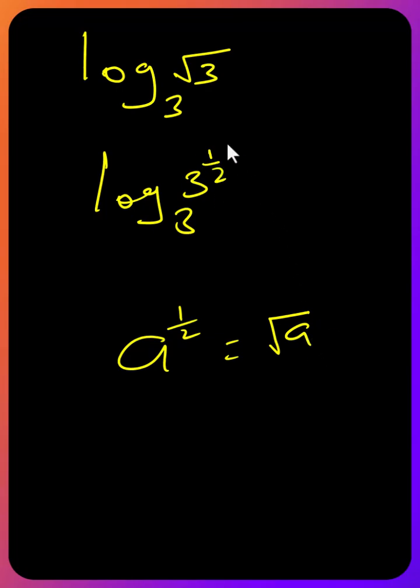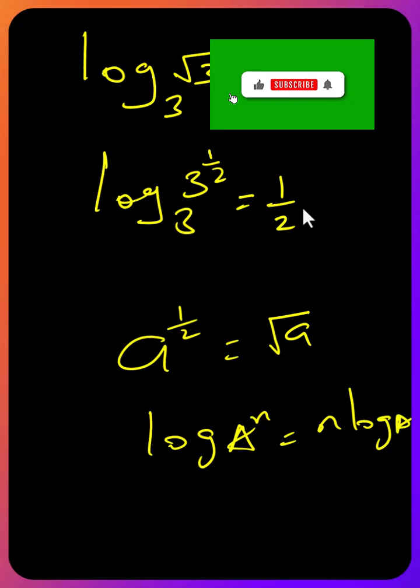So from here this one is a power rule. Log a to the power n is the same as n log a. So this is the same as 1 over 2 log₃ 3.